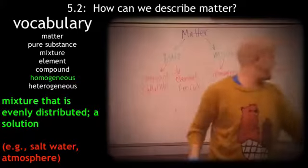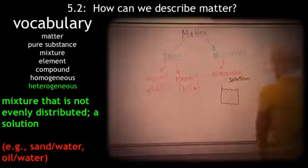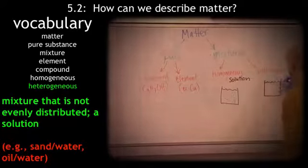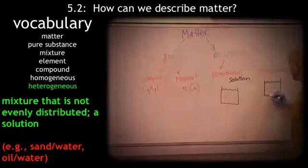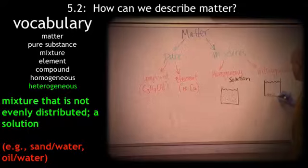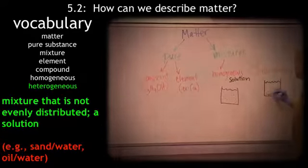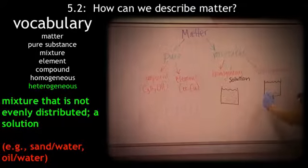Now a heterogeneous mixture is something else. It's where it does not dissolve and it's not going to be evenly distributed throughout. An example is sand and water. You could shake it up initially and get it distributed, but eventually that sand is going to settle down.